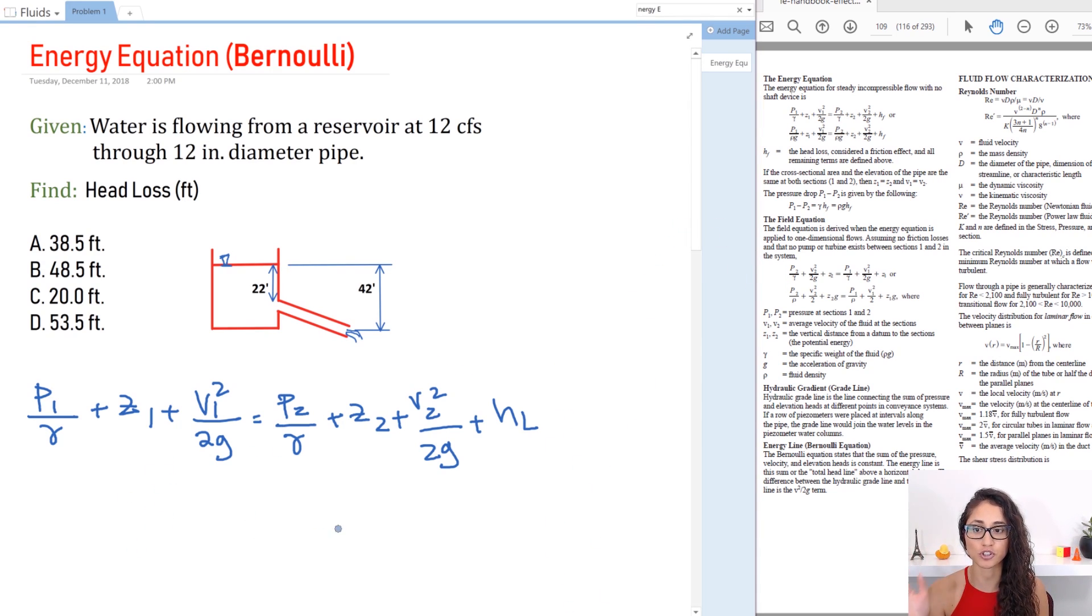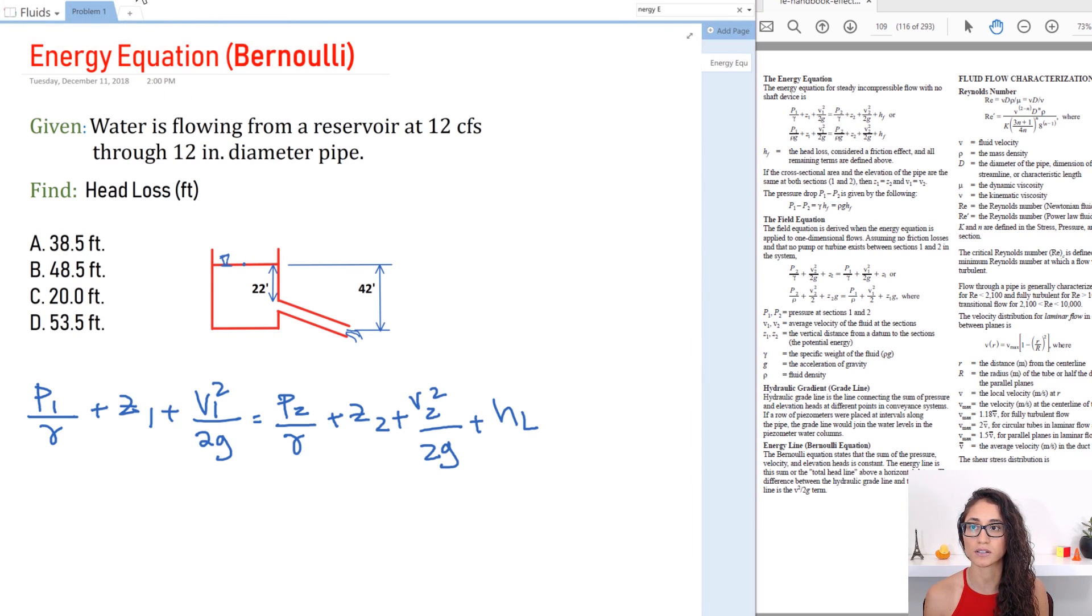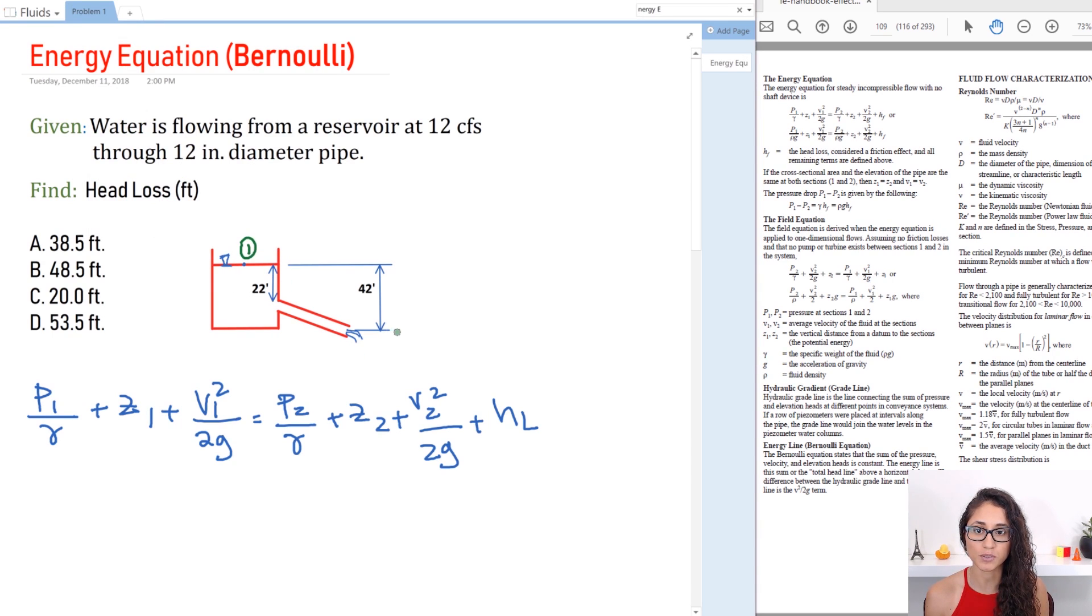Okay so let's determine every term here so we can solve for HL. Now let's call this point right here, let's call it 1. Let me do it in a different color. Let's pick green. So let's call this point 1 and let's call this point right here 2. Okay so usually at the surface your pressure and the velocity is always 0. So which means here you have your pressure is 0 and the velocity is 0 because water is stagnant.